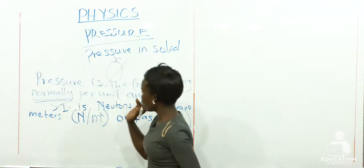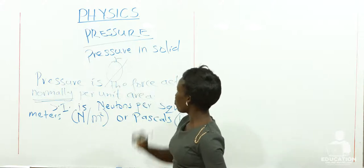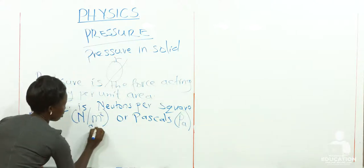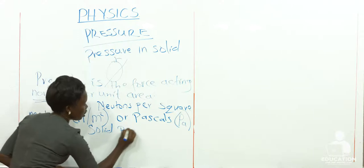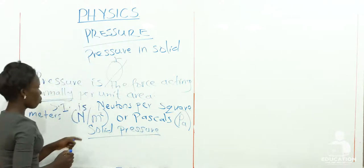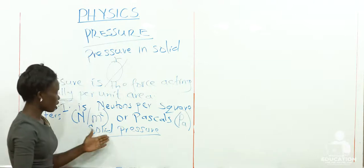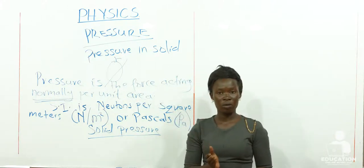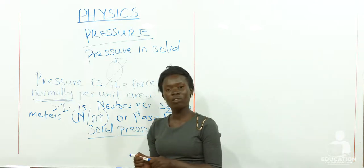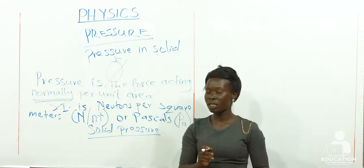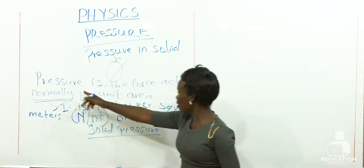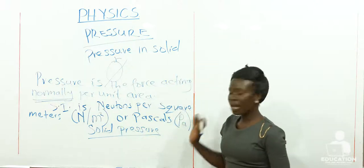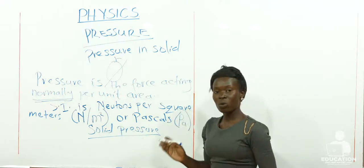Now that we know the definition of pressure and its SI unit, let us go back to solid pressure. What causes pressure in a solid? Solids have molecules, but unlike other states, the molecules in a solid are not in random motion — they are compact together. Since pressure is force acting normally per unit area, the pressure a solid exerts on another object will be its weight.